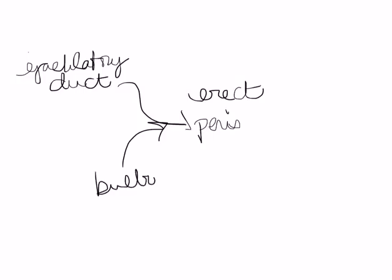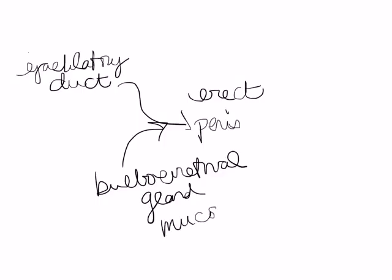There's one more gland at this point, the bulbourethral gland. And it adds mucus, so that the sperm has something slippery to follow along with and to help them get through the vagina and up into the uterus, where these teeny-tiny sperm have a fairly long way to travel.